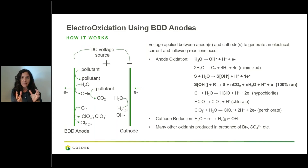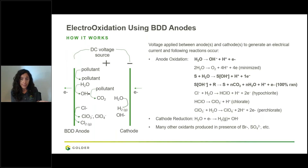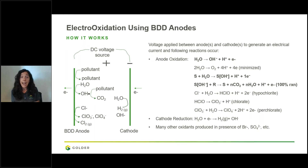In the same process, if there are ions in solution — chlorides and others — byproducts such as hypochlorite (like household bleach, but much diluted), chloride, and perchlorate are produced. On the cathode side, water electrolysis occurs, producing hydrogen gas that escapes the solution.